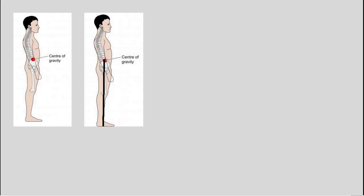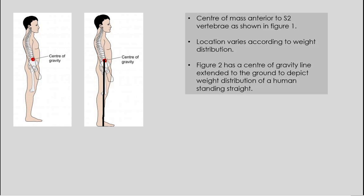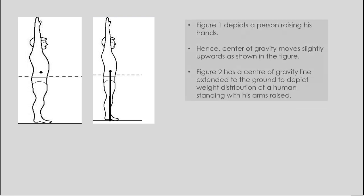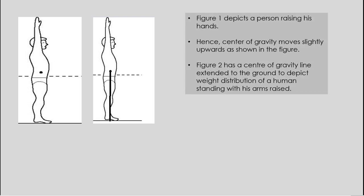The center of mass in the human body is located approximately anterior to the S2 vertebrae as shown in the figure, but this location can vary according to the weight distribution of the body. When a person raises their hands, the center of gravity moves slightly upwards because the overall mass distribution is moved.